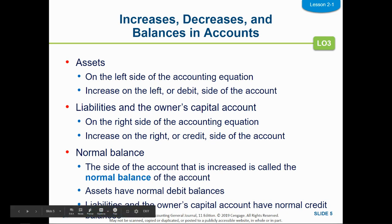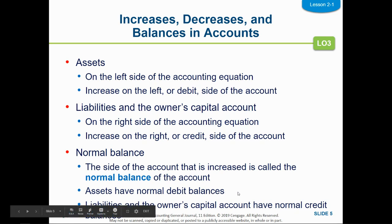The normal balance side of an account is where it increases. Debits are on the left, so the left side of the T-Account is the normal balance side for assets, because they fall on the left of the accounting equation. Liabilities and owner's equity fall on the credit side because they fall on the right side of the accounting equation — right means credit — so they will always have a normal balance of a credit.